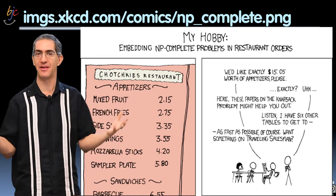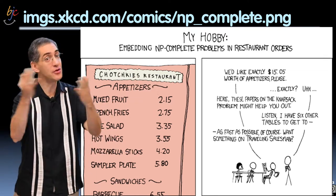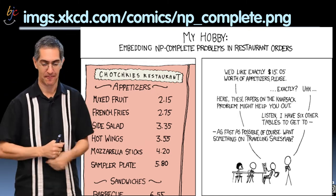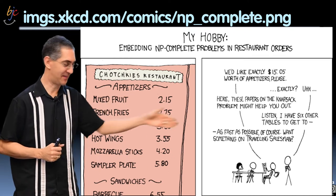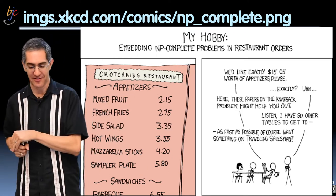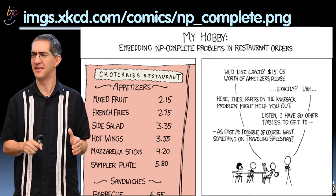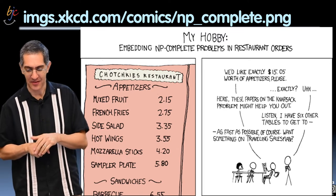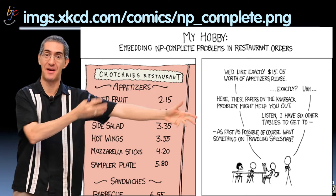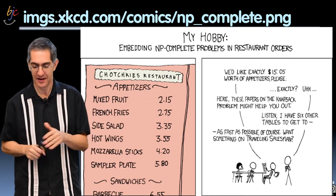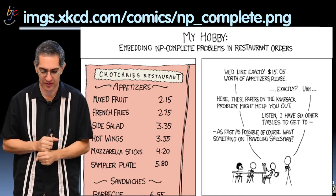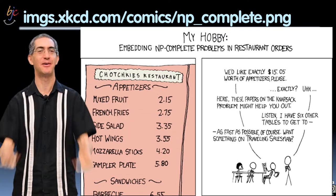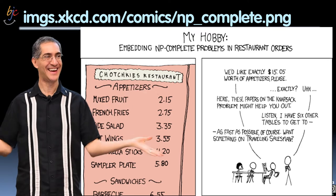Here's a wonderful XKCD cartoon — a delightful summary. Now that you know what NP-complete problems are, and you know traveling salesman and subset sum, look at this: a customer says, 'We'd like exactly $15.05 worth of appetizers, please.' That sounds like subset sum. The waiter hands over papers on the knapsack problem — maximizing a similar problem, another NP-complete problem. The waiter says, 'I've got six other tables to get to as fast as possible' — do you want something on the traveling salesman? Now you know why this is funny: they're giving the person an NP-complete problem at a restaurant.